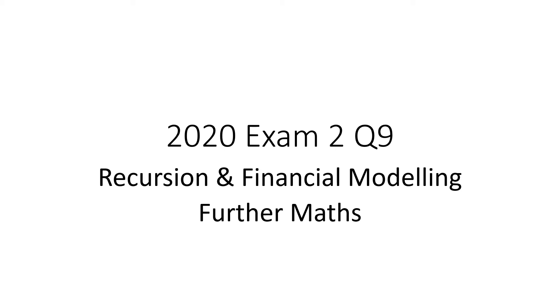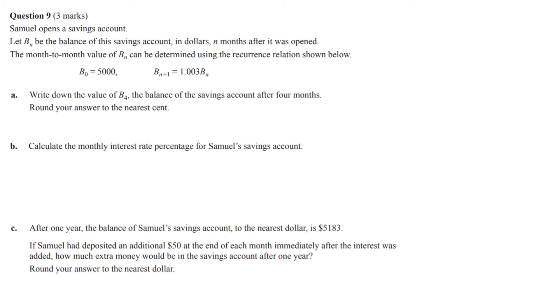2020 exam 2 question 9 financial. Okay, so we've got a recurrence relationship month to month of Samuel's savings account and we need to work out B₄, which is after four months, and round the answer to the nearest cent.